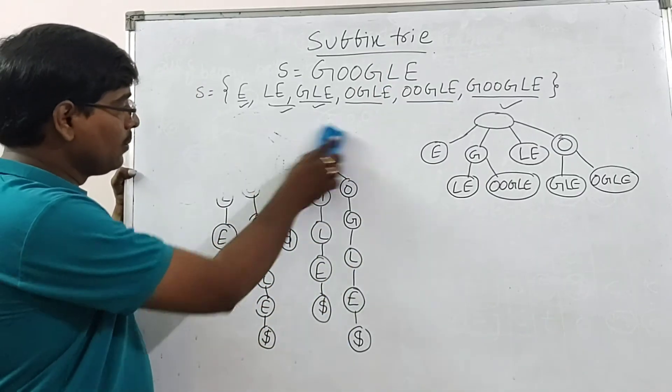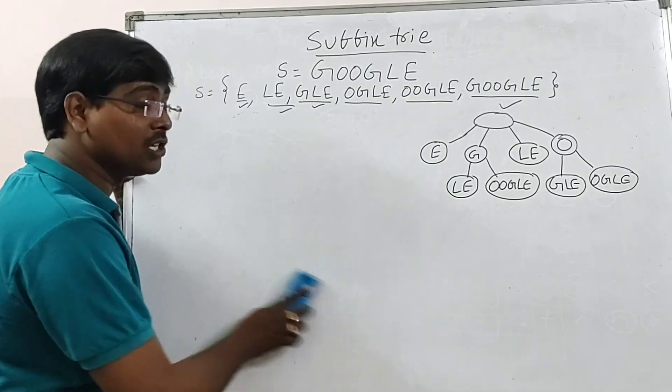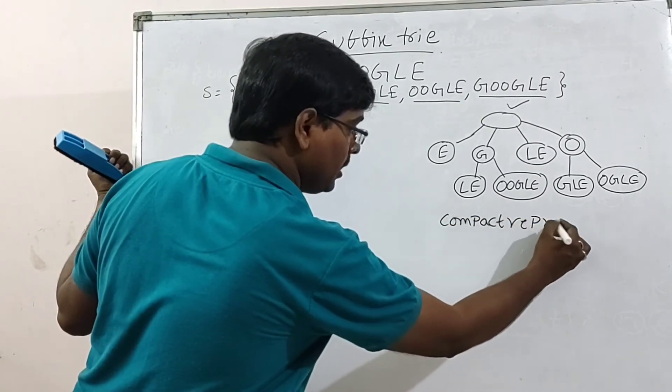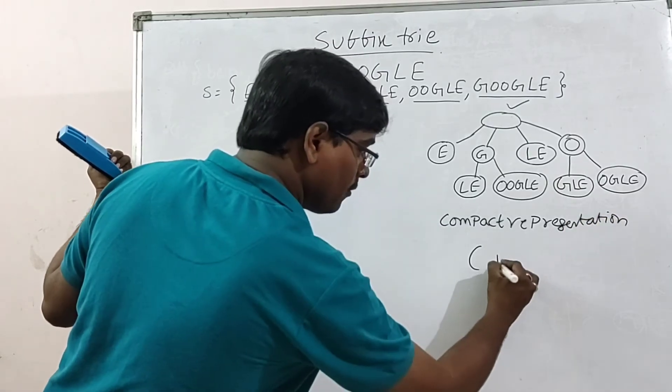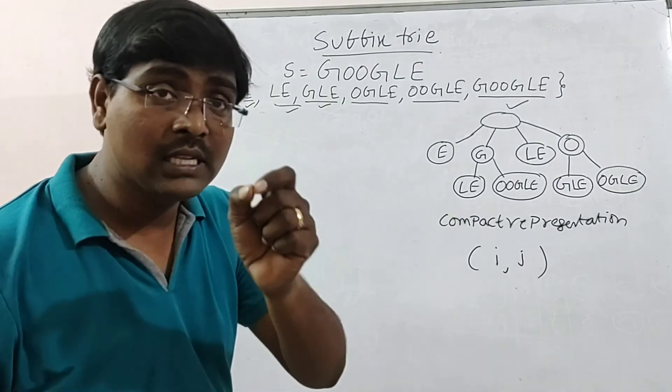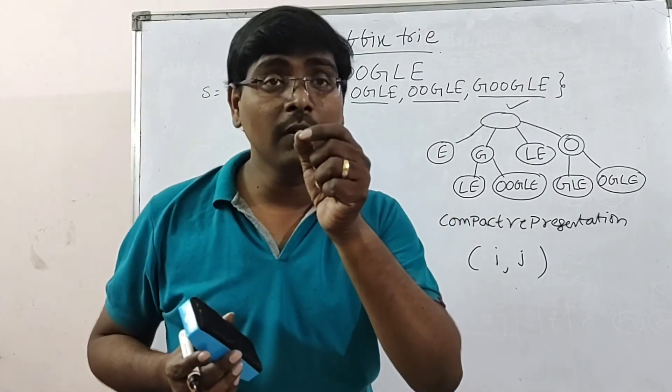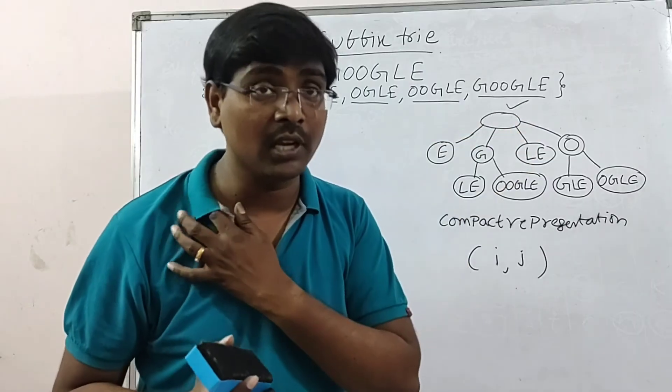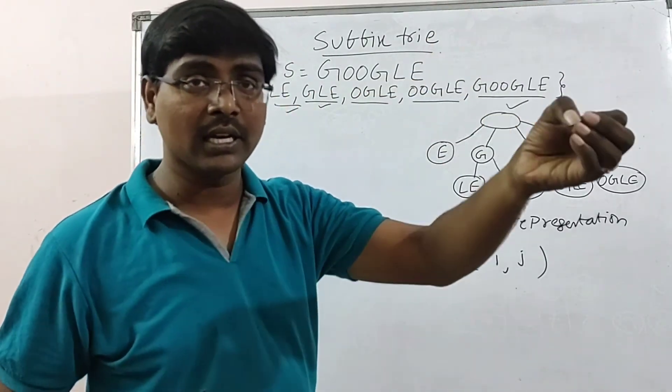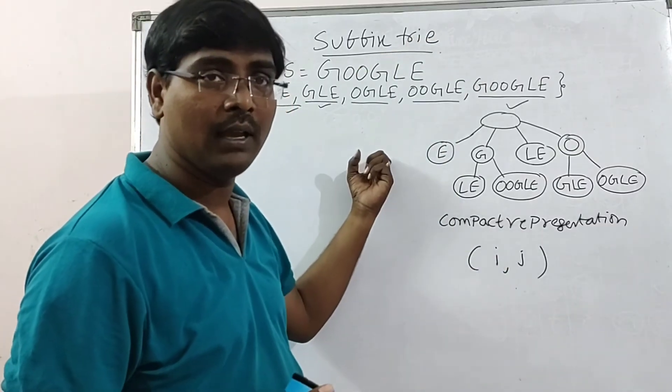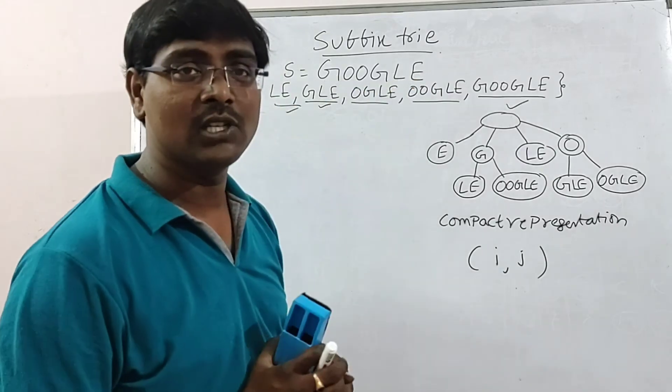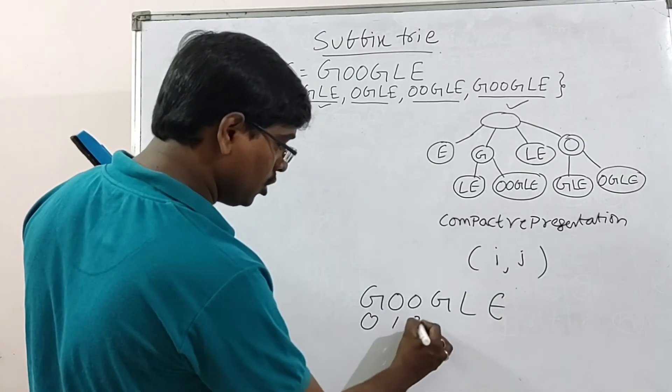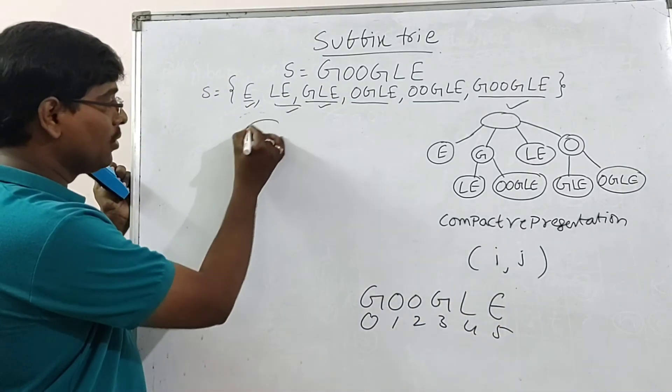You also know one more thing. Compact representation. If you want, you can represent in the compact form. Each node is of the form I, J only. Previously, in the compressed trie, a node consists of three parameters: I, J, K. Here, the first two parameters specify index of the string. I have totaled some seven-eight strings. But here, there is no problem. It consists of only one string. The index is 0, 1, 2, 3, 4, 5.